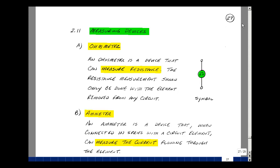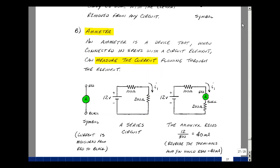The next device is actually meant to be used in an active circuit. It's called an ammeter. This is very commonly mispronounced as an ampmeter. It's not. It's ammeter. This is a device that when connected in series with a circuit element can measure the current flowing through the element.